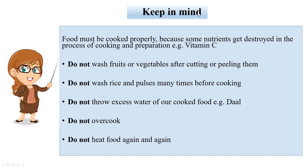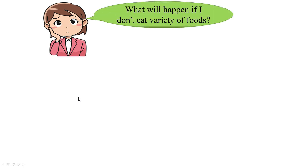Some important points to keep in mind while preparing food: food must be cooked properly, as some nutrients get destroyed in the process of cooking. For example, vitamin C gets easily destroyed while cooking. Do not wash fruits or vegetables after cutting or peeling them. Do not wash rice and pulses many times before cooking. Do not throw away the excess water from cooked food such as dal. Do not overcook or heat food again and again.